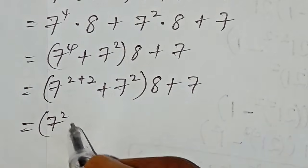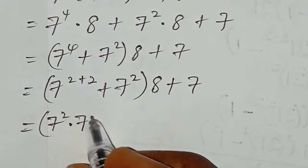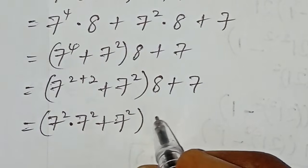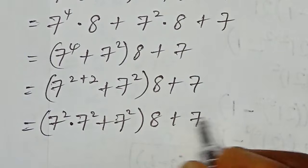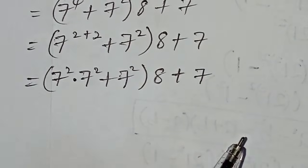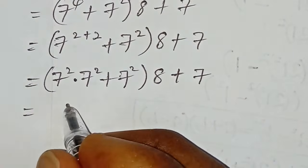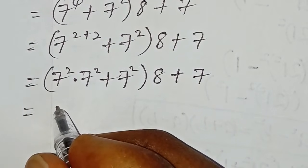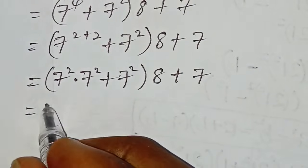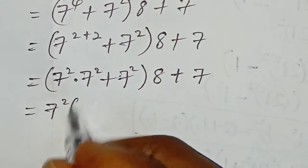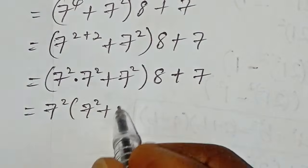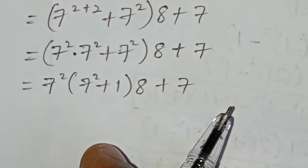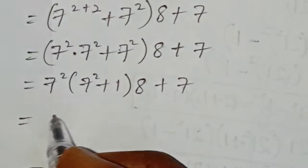Inside the bracket we have seven to the power of two multiplied by seven to the power of two, plus seven to the power of two, close bracket, multiplied by eight, plus seven. We then factor out seven to the power of two from inside, giving seven to the power of two multiplied by the bracket seven to the power of two plus one, times eight, plus seven.